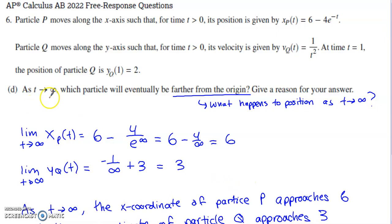In the final part of this question, it says as T approaches infinity, which particle will eventually be farther from the origin? Give a reason for your answer. Distance from the origin depends on the position function. Particle P is on the x-axis, particle Q is on the y-axis. Whichever one has a larger magnitude. If something's negative, we're really considering magnitude. If particle Q is at a position of negative 10 and particle P is at a position of 2, although 2 is bigger than negative 10, negative 10 puts us farther from the origin.